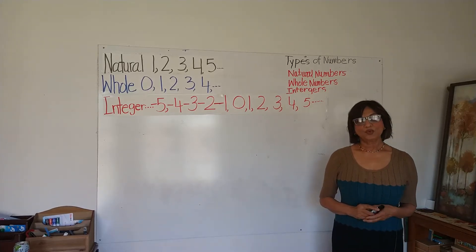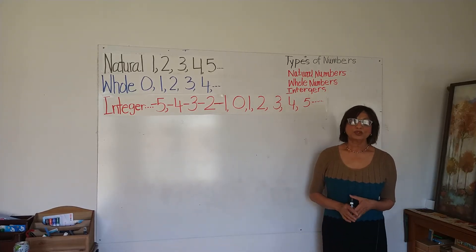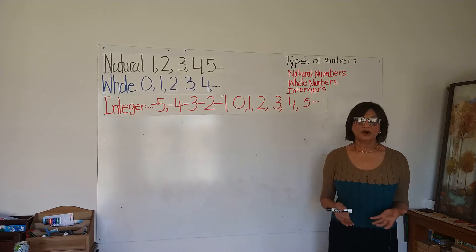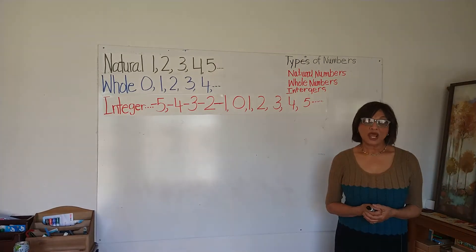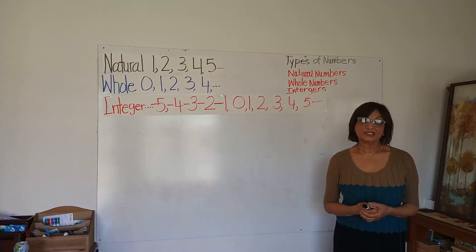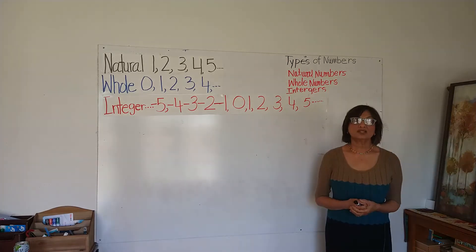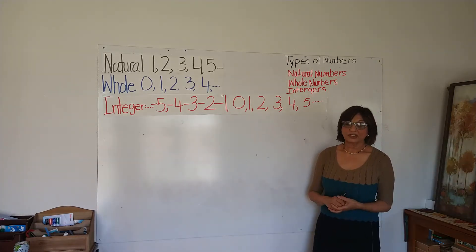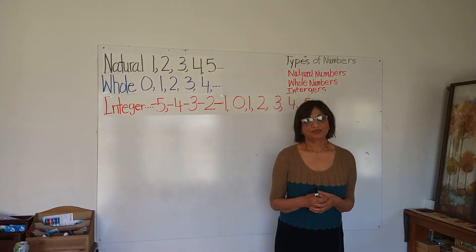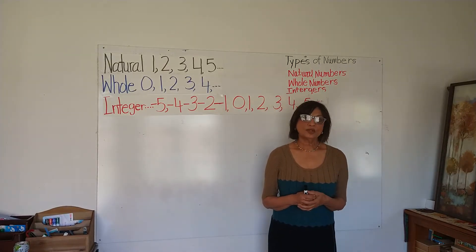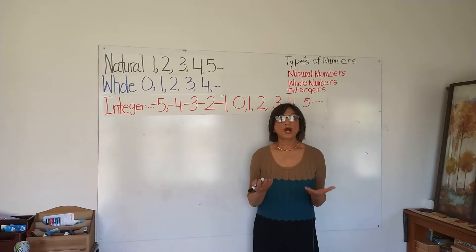Hi everyone, today we are going to learn three types of numbers. We are going to learn natural numbers, whole numbers, and integers. So let's get started. What are the natural numbers? Natural numbers are counting numbers like one, two,